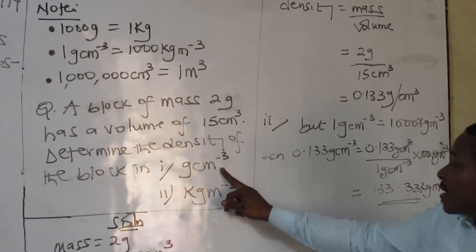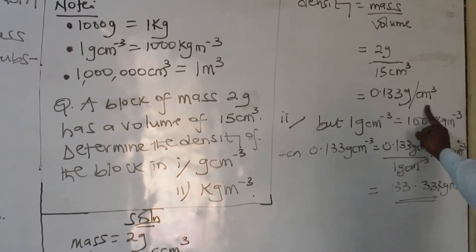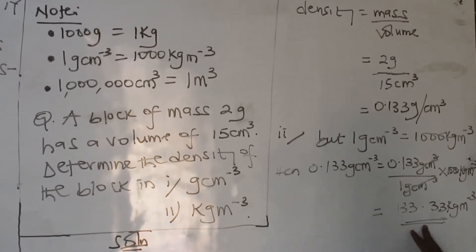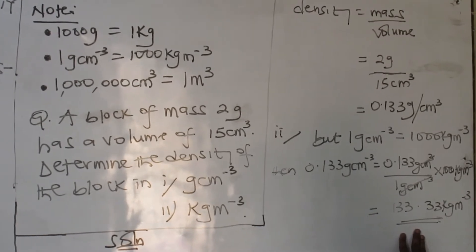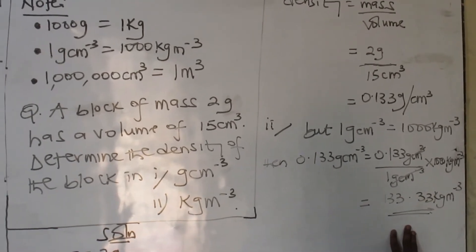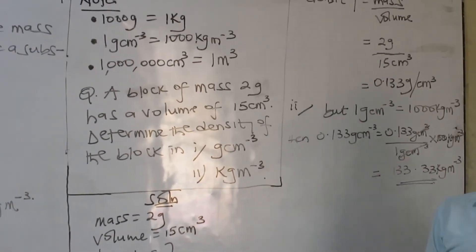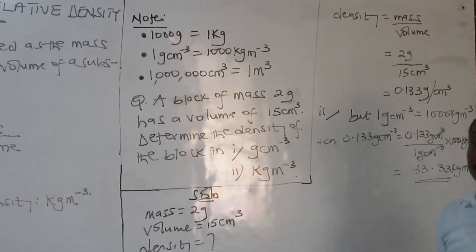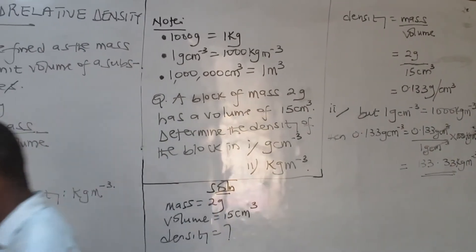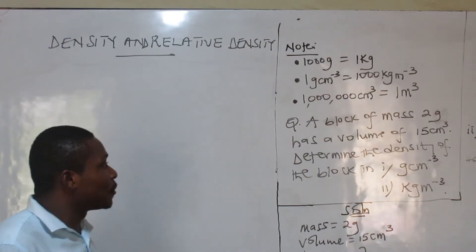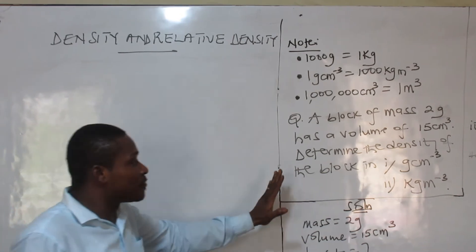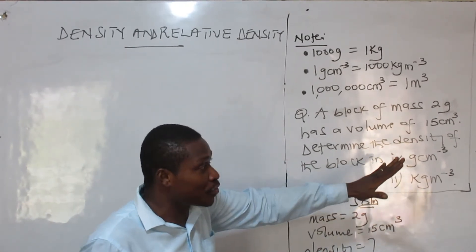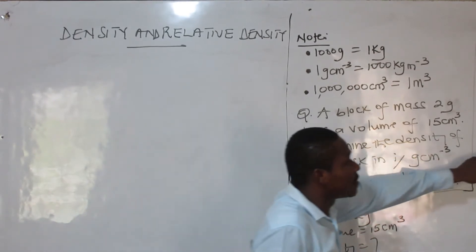Calculate and leave your answer in this form — I've done that. Calculate and leave your other answer also in this form — I've also done that. Now we can also have an alternative to this. What if you don't want to use that parameter? Then you have to go the long way. Always remember the parameter — that's very easy.